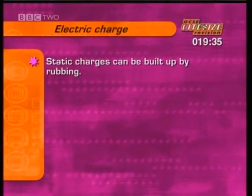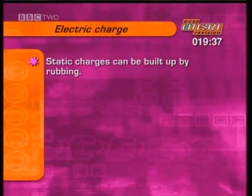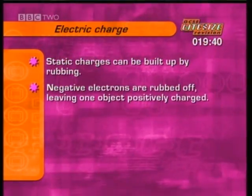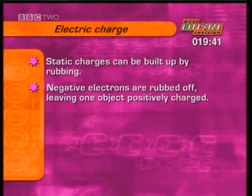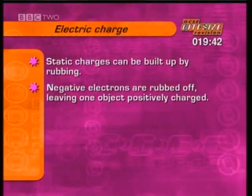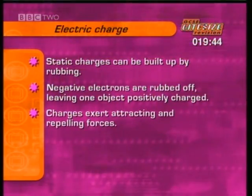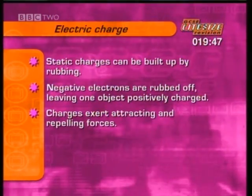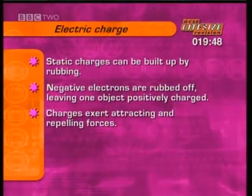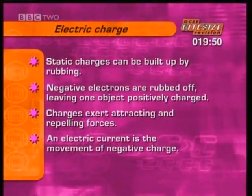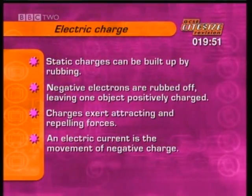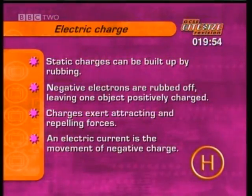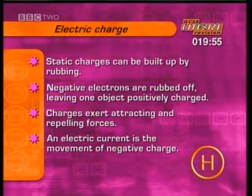To summarise: static charges can be built up by rubbing, when negative electrons are rubbed off, leaving one object positively charged. Static charges exert attracting and repelling forces. And an electric current is the movement of negative charge. There's some more about electric charge in the Higher Tier Science programme.